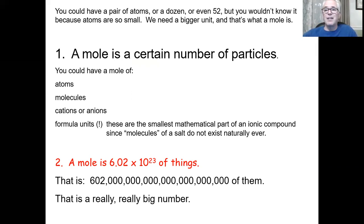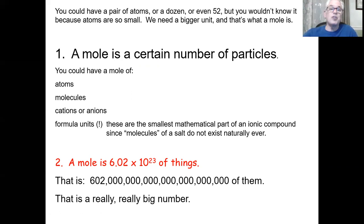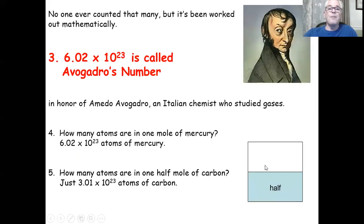You don't really have to write that number down — it's ridiculously big. You're going to remember it because we'll use it all the time. Nobody ever counted that high — you couldn't count that high. This number has been worked out mathematically, and it's called Avogadro's number.